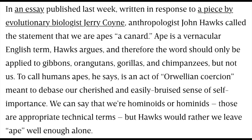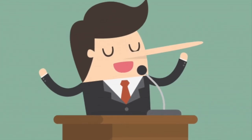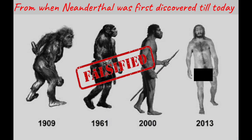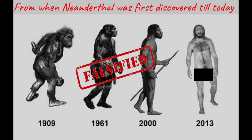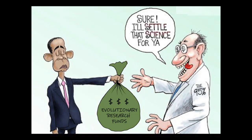We shouldn't smuggle taxonomic principles into everyday language to make a political argument. And that is ultimately what 'humans are apes' is — it is an argument that we aren't as great as we actually are. Cladistic terminology is controlled by taxonomists, people who often shift their ideas as much as political opinion does.